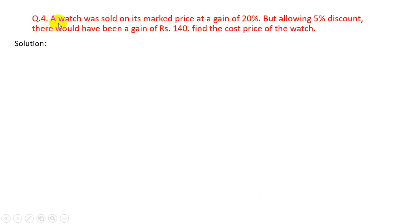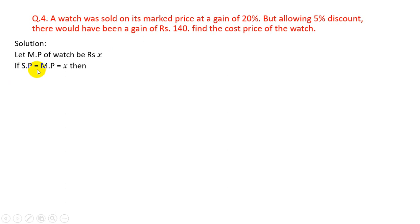Question number 4. A watch was sold at its marked price at a gain of 20%, but if sold allowing 5% discount there would have been a gain of Rs.140. Find the cost price of the watch. Let MP of watch = Rs.X. Since SP = MP = X and profit% = 20%, this means selling at marked price yields 20% gain.